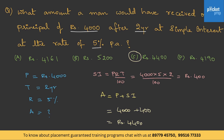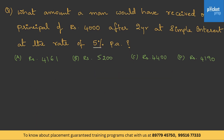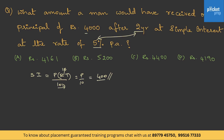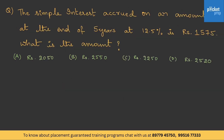Then Amount = Principal + Simple Interest = 4000 + 400 = rupees 4400. Therefore the answer is option C. To speed up with mental calculation: R × T = 5 × 2 = 10, then 10/100 gives P/10, so 4000/10 = 400. Add this to the principal: 4400. You could do this entirely mentally without pen and paper.